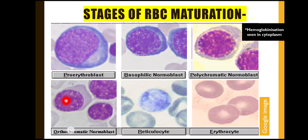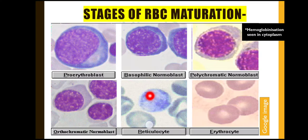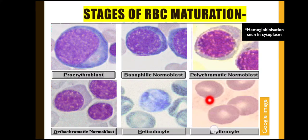After the nucleus is extruded from the cell, what we get is a reticulocyte. The reticulocyte is a young RBC — it does not have a nucleus but has ribosomes and RNA material. This young RBC is pumped into the peripheral blood circulation, remains there for around two days, and then the spleen removes the RNA and ribosomal material. After that, it matures into a mature RBC. These are the various stages of RBC maturation.